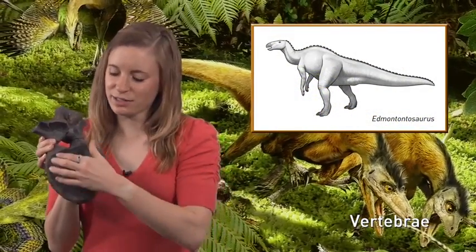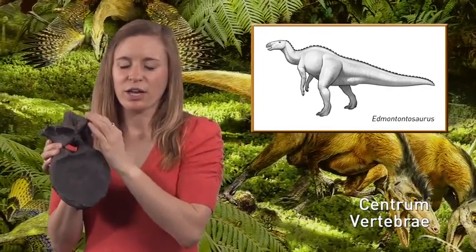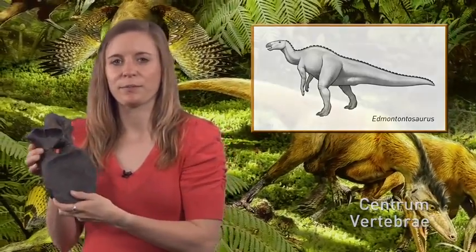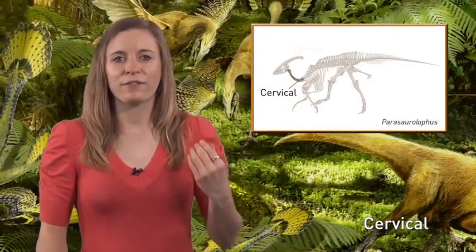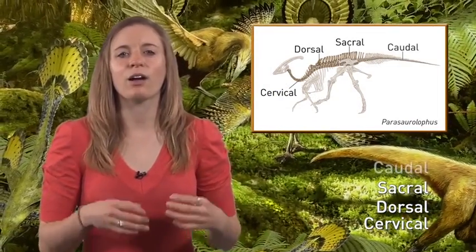Your backbone, or spinal column, is composed of many small bones called vertebrae. This is the dorsal vertebrae of an Edmontosaurus. Each vertebra has a disc-like centrum and many processes for muscle attachment. You can see the hole where the spinal cord fits. The vertebrae in your neck are different from the ones in your back. The vertebrae in your pelvis fuse to the hip bones to form a solid structure. Although we don't have tails, tails are composed entirely of vertebrae. Neck vertebrae are called cervical, back vertebrae are dorsal, hip vertebrae are called sacral, and tail vertebrae are caudal.